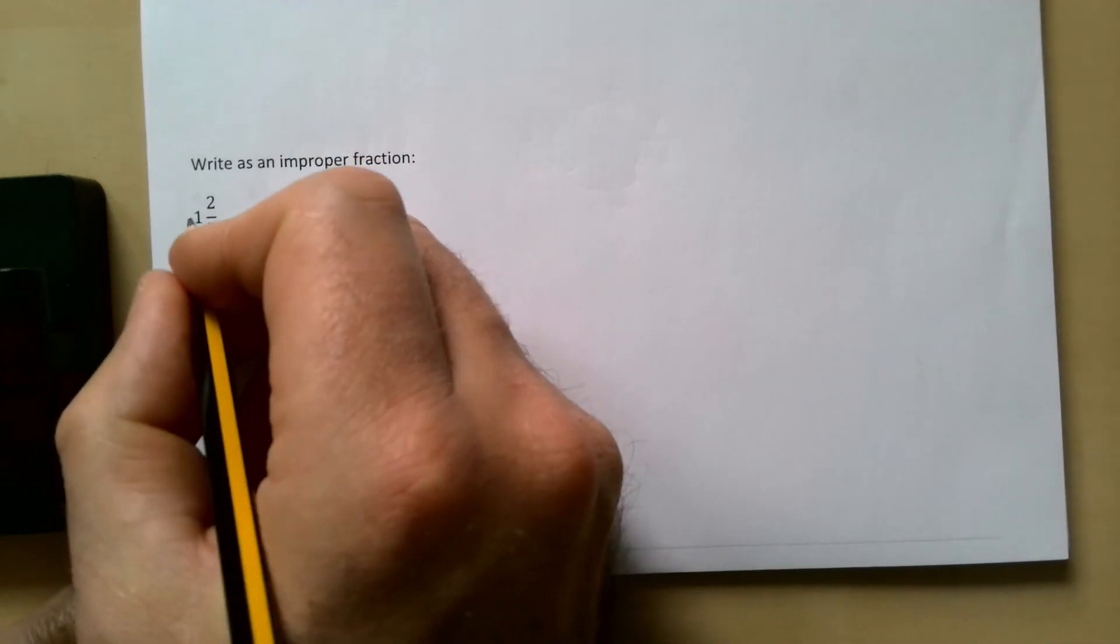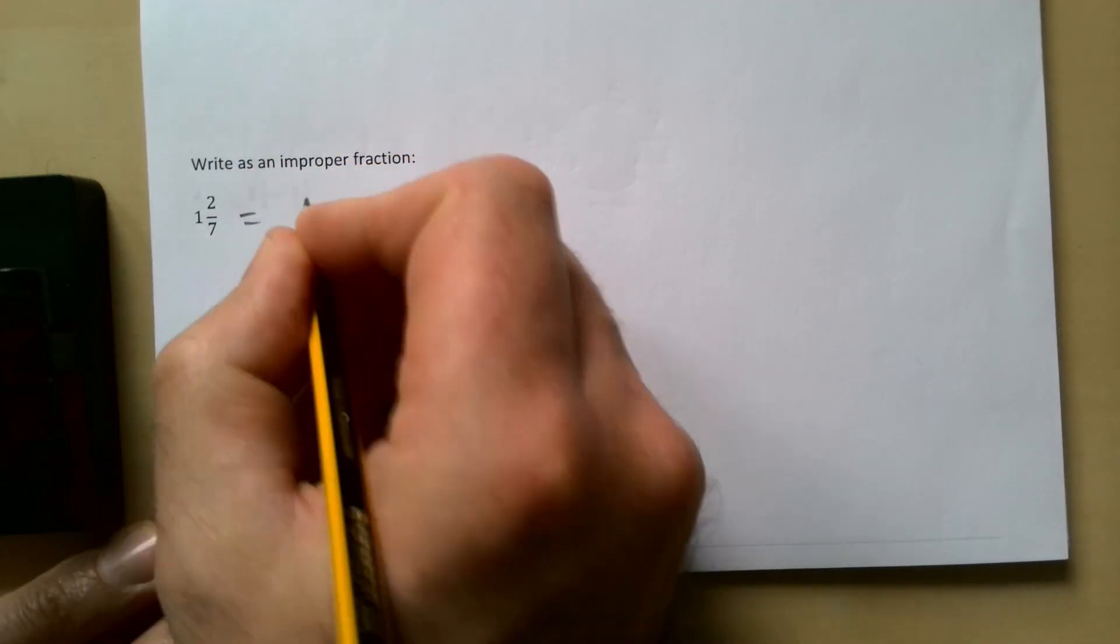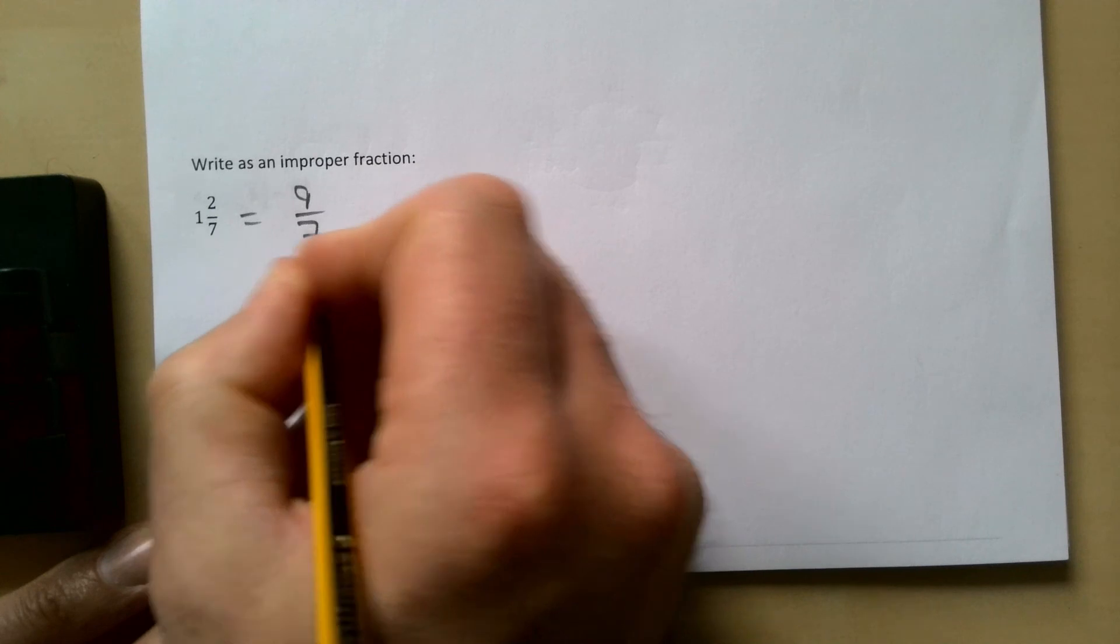Write as an improper fraction then: 1 and 2/7. One times 7 gives me 7, plus 2 is 9 over 7.